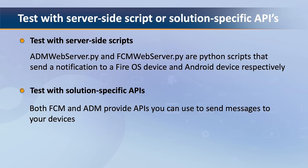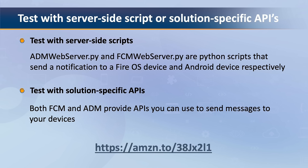The second way is to test with a solution-specific API. Both FCM and ADM provide APIs that you can use to send messages to your devices. For detailed instructions on how to send a message through those APIs, you can use the link on screen, which you can also find in the description below.